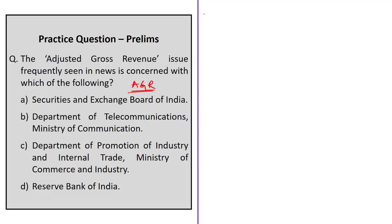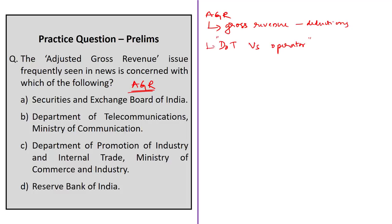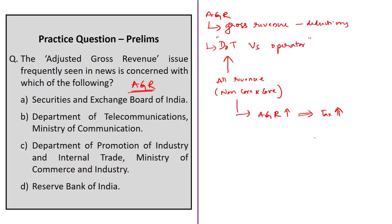The next practice question is based on Adjusted Gross Revenue. AGR means gross revenues after some specific deductions, taxable by the government. The dispute was between the Department of Telecommunications and telecom operators regarding what constitutes AGR. Telecom companies argued it should only comprise revenues from telecom services, while the Department of Telecommunications argued AGR should include all revenues — including non-core operations such as rent, profit on sale of fixed assets, and real estate transactions. Including all these revenues increases the AGR value and the tax burden on telecom companies, which is why this issue was under litigation for more than 14 years. Option B — Department of Telecommunications — is the correct answer.